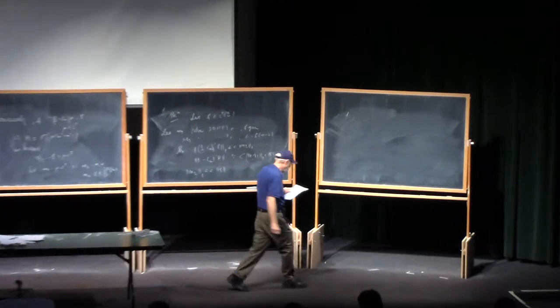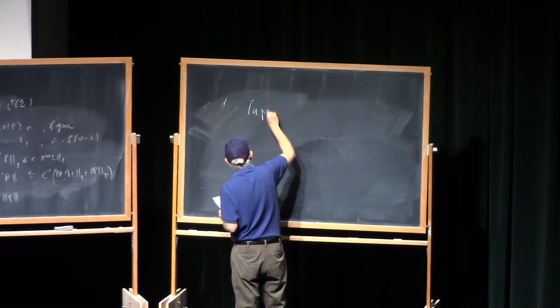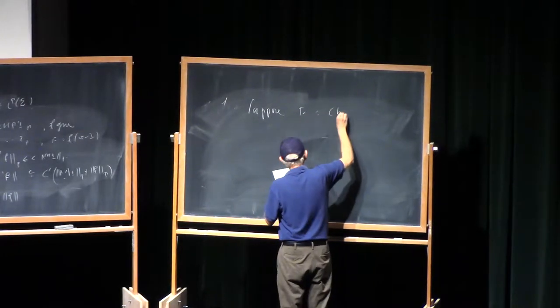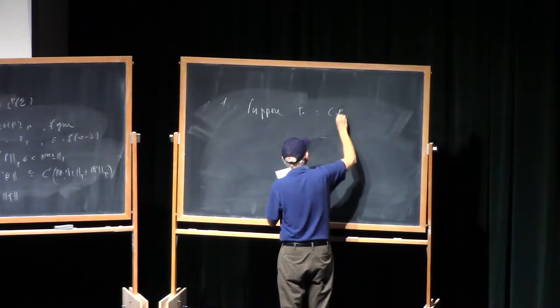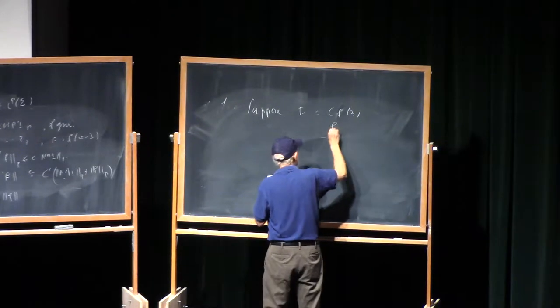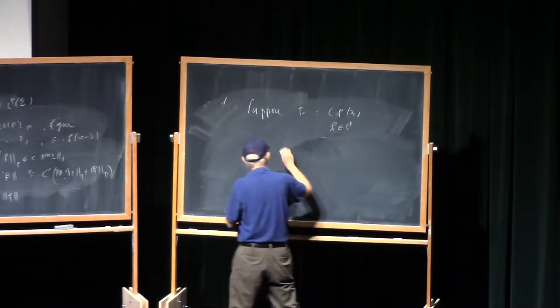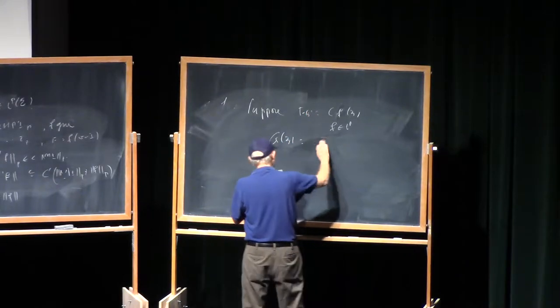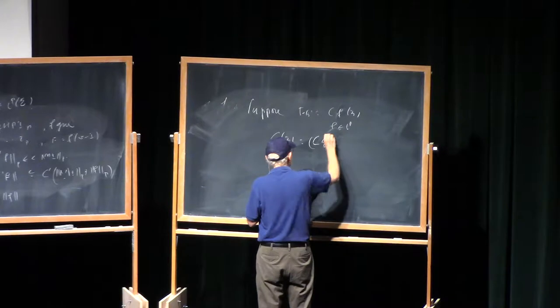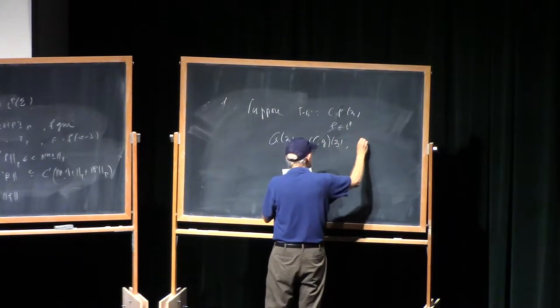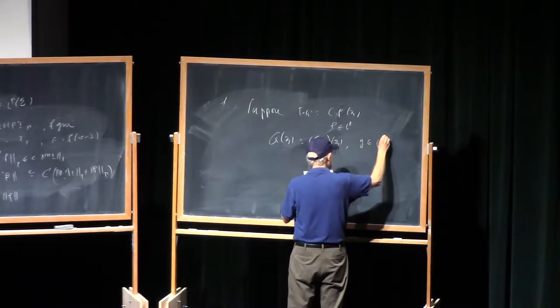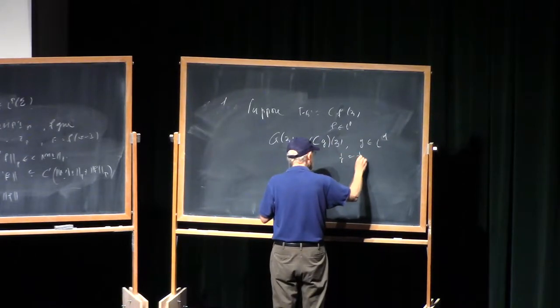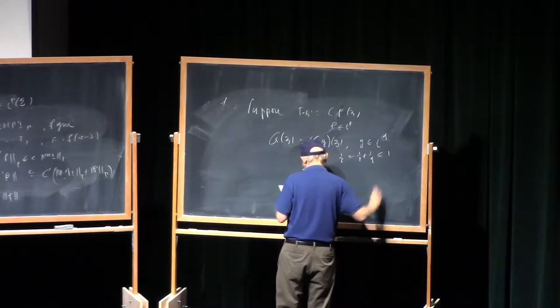Okay. Suppose f is equal to Cf of z, f in LP, and g of z equals Cf g of z, where g belongs to Lq. And 1 over r, which is 1 over p plus 1 over q, is less than or equal to 1.